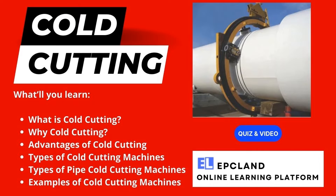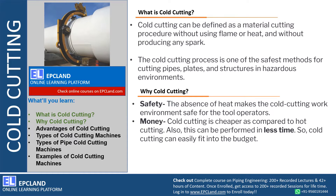Cold cutting can be defined as a material cutting procedure without using any flame or heat, or without producing any kind of spark. This is totally different from traditional cutting where we used to use flame and heat to produce cuts. The cold cutting process is one of the safest methods for cutting pipes, plates, and structures, especially in hazardous environments.